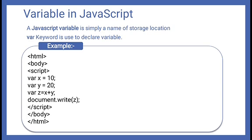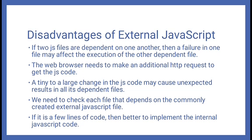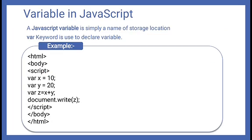For example, 10 is stored — it's integer type. 20 is stored — integer type. We added both and stored the result in Z — integer type. When we print Z's value, it will give us 30.